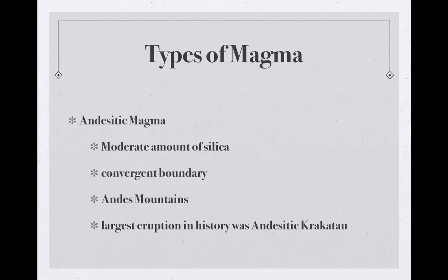Next in BAG is andesitic magma. It has a moderate amount of silica. These occur at convergent boundaries, such as the Andes Mountains. The largest eruption in history was an andesitic volcanic eruption — Krakatoa. Because they're at convergent boundaries, they can have much more violent eruptions.